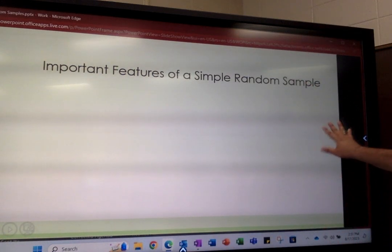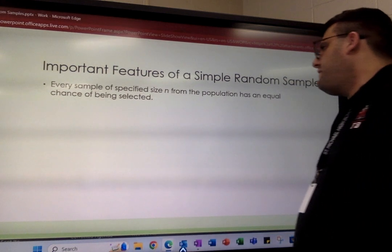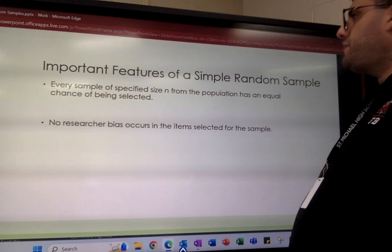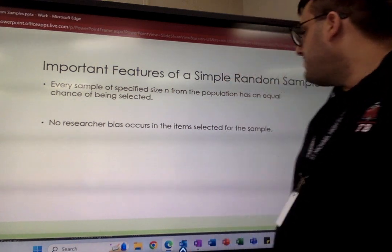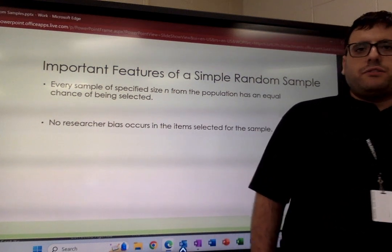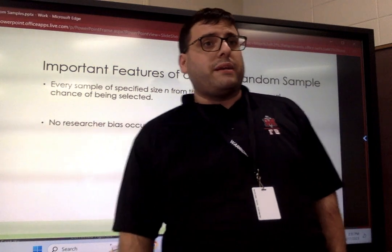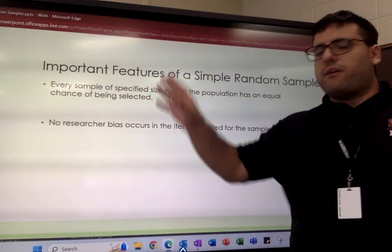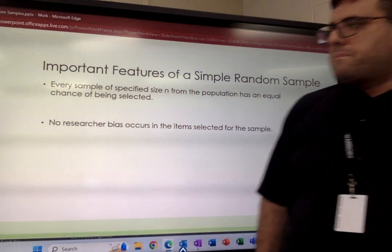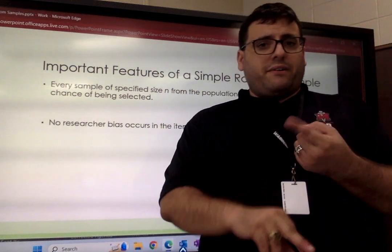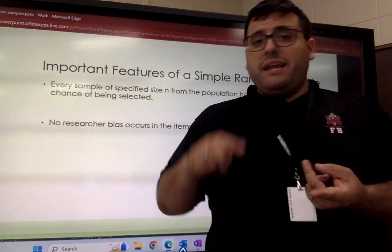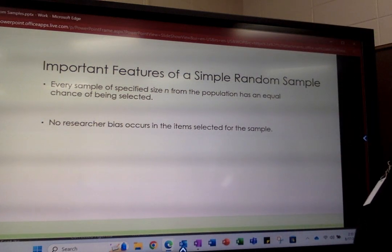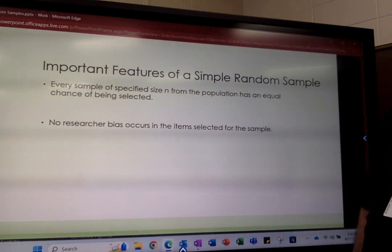Here are some important features of a simple random sample. Every sample of specified size n from the population has an equal chance of being selected. A good advantage of using a simple random sample is that there's no researcher bias that occurs in the items selected for the sample. As we move into section 1.3 on experimental design, we have to be very careful about not making errors — one of which is bias. Bias can come from the materials, the setting, or even the individuals we study. But in a simple random sample, we get no bias in those items.